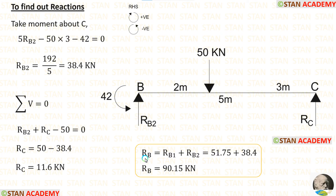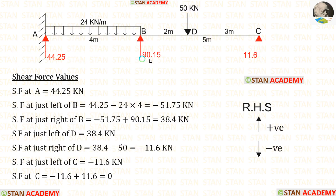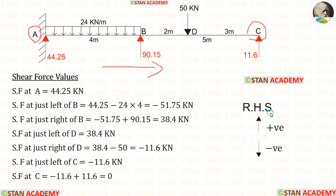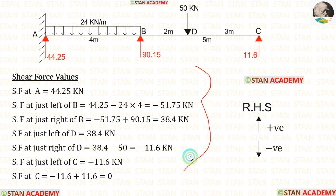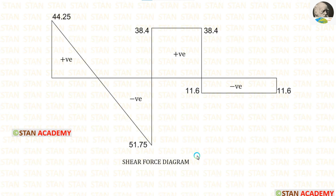At point B, we have calculated the reaction two times. Adding both, we get RB = 90.15 kN. Now we are going to draw the shear force diagram. Before drawing, let us calculate the shear force values, starting from point A and moving towards point C. Upwards is positive and downwards is negative. Using these values, we can make the shear force diagram.